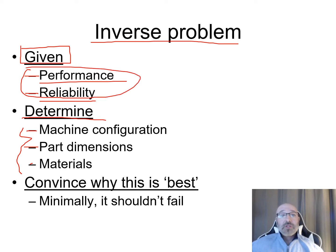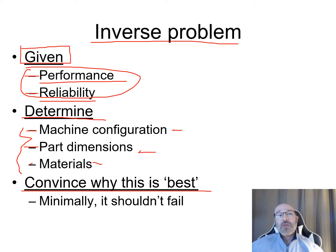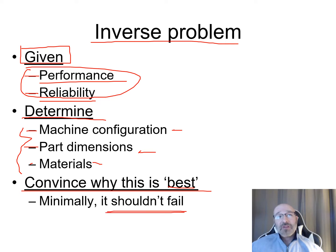From there, we need to convince why our chosen materials, parts, and configurations are the best. This is what we talked about in the down-selecting process — having a couple different ideas, organizing them in a spreadsheet or matrix to figure out which is best. At minimum it shouldn't fail, but we need better criteria, and we must meet the performance and reliability requirements provided.